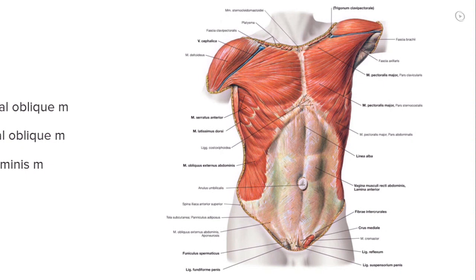The muscle layers — and again we're looking at the anterolateral flat muscles — would include the external abdominal oblique, the internal abdominal oblique, and we also have our transversus abdominis. In this view we can see the external abdominal oblique with its fibers running down and in.